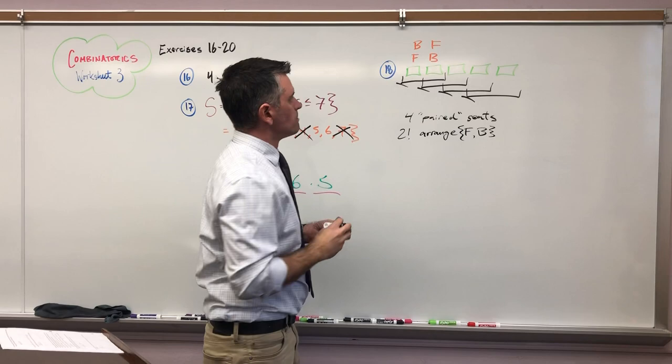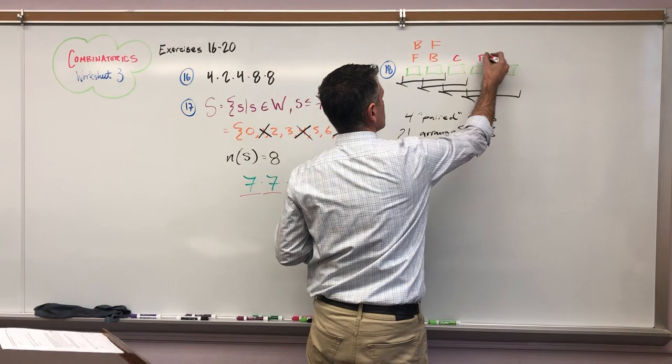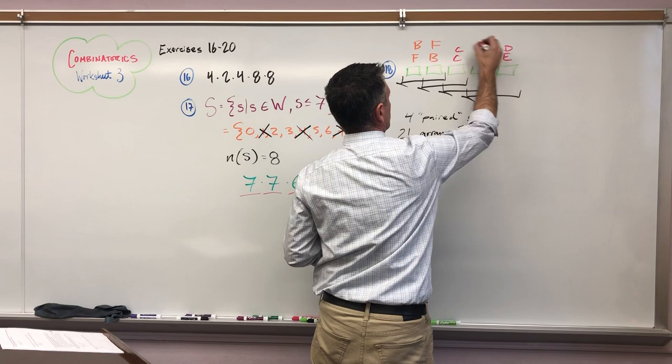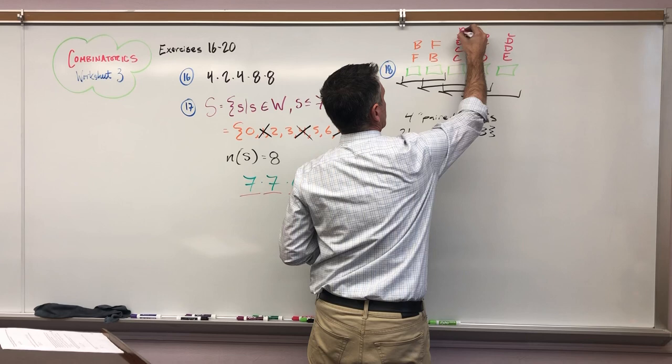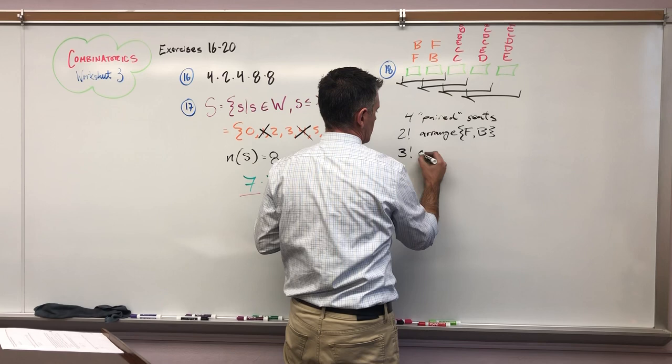But now remember that we also have, not Adam, but we have Sydney, Dwayne, and Evan that also all need to be seated. So Sydney, Dwayne, and Evan could go there, or they could go here, or they could go here, or here, or here, or here. I can barely see it, I'm sure that you can't. In any case, there are 3 factorial ways.